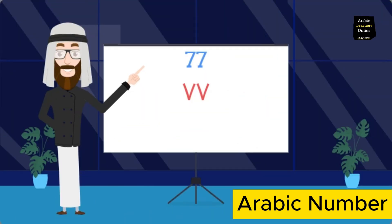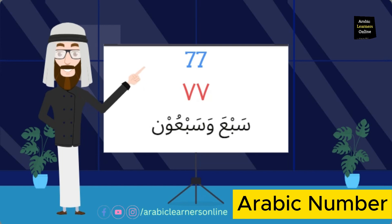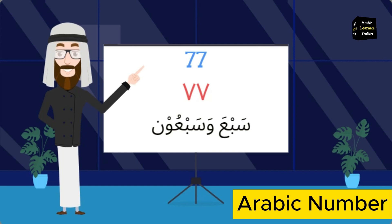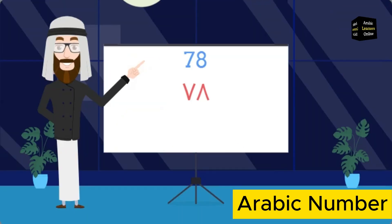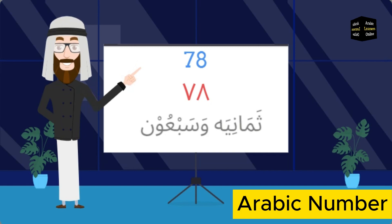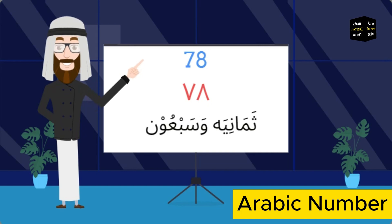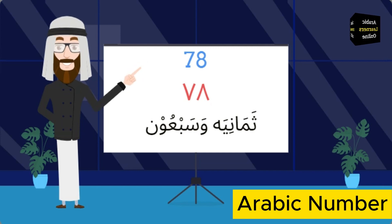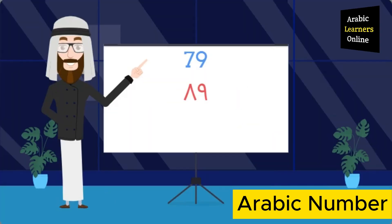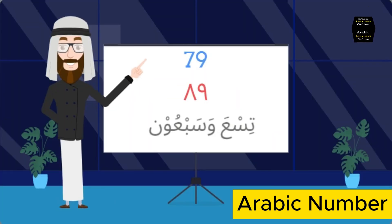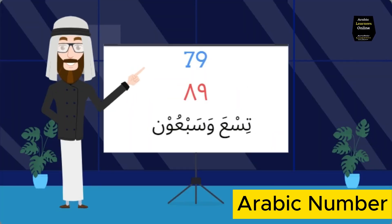Seventy-seven: سبعة وسبعون. Seventy-eight: ثمانية وسبعون (thamaaniya wa-sab'oon). Seventy-nine: تسعة وسبعون (tis'ah wa-sab'oon).